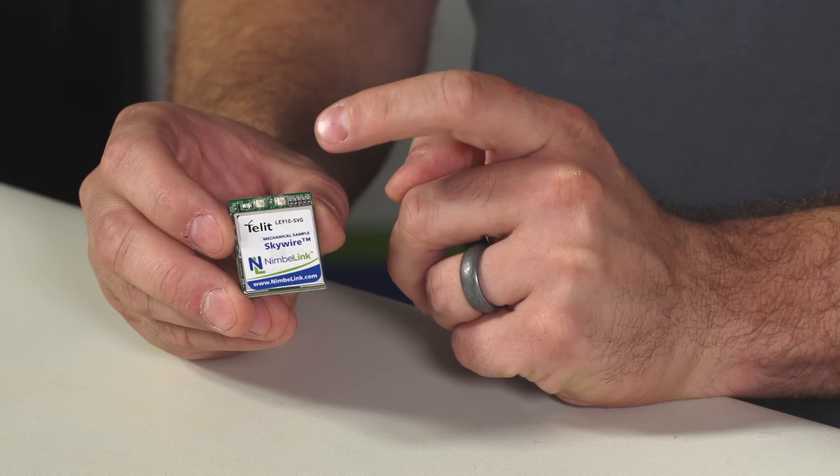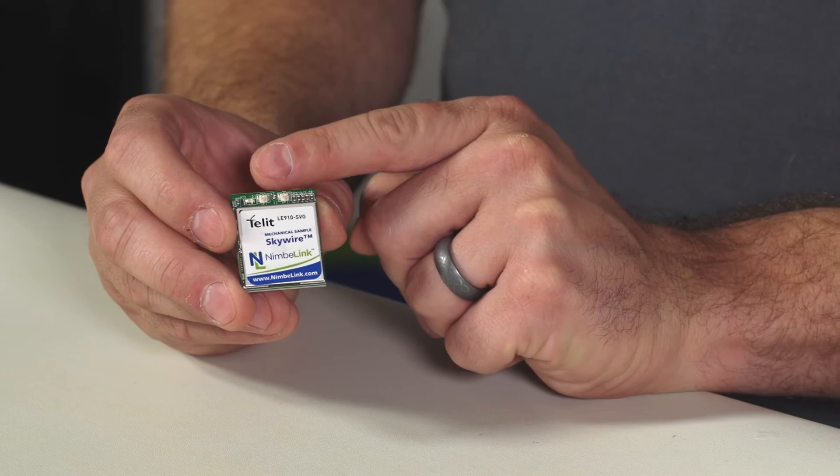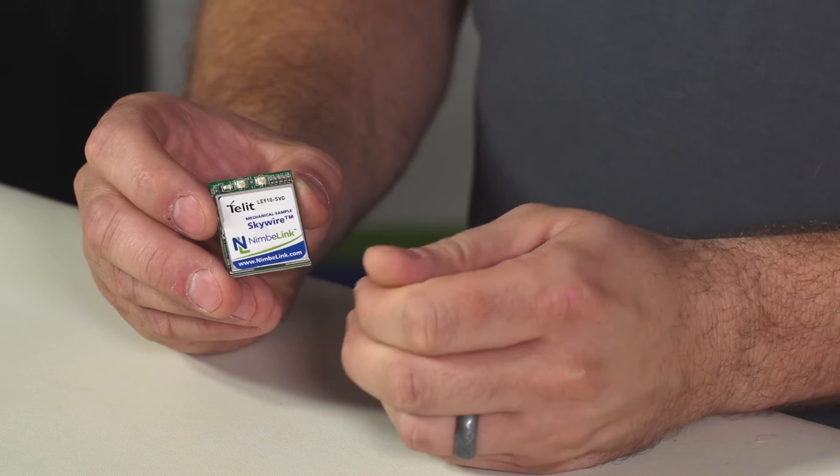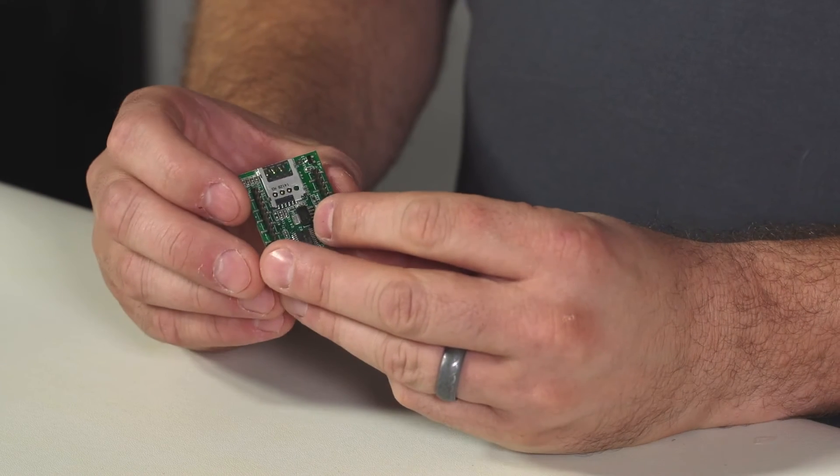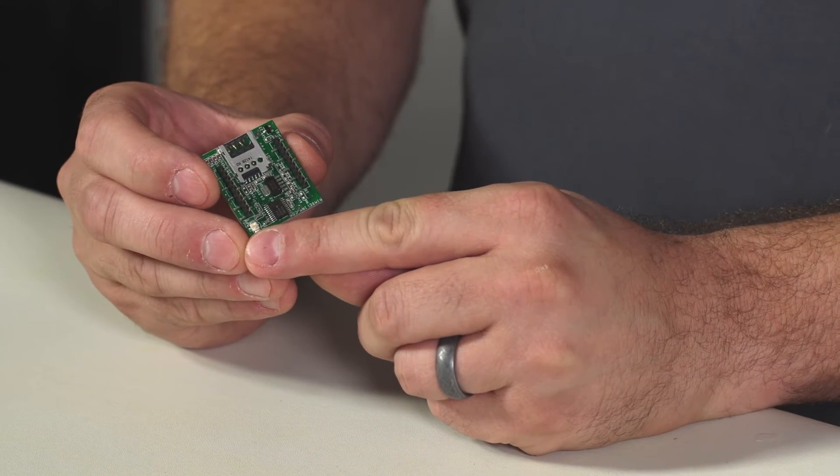On the module itself there are three antenna connection points: one for the primary cellular antenna, one for the diversity cellular antenna, which is required for LTE applications, and on the backside of the module there is a U.FL port specifically for the GPS and GLONASS antenna interfaces.